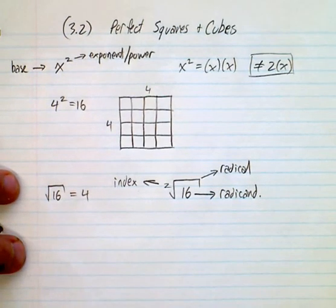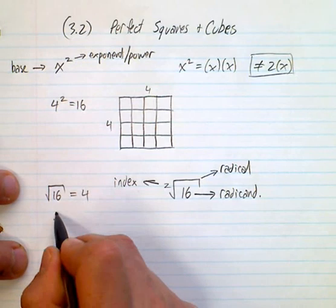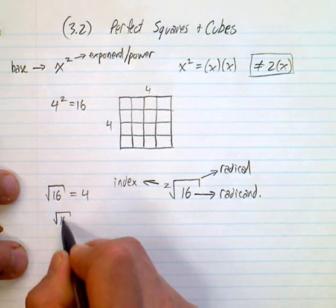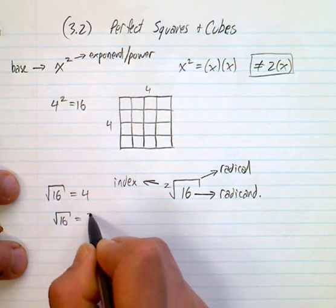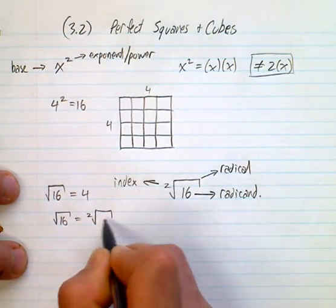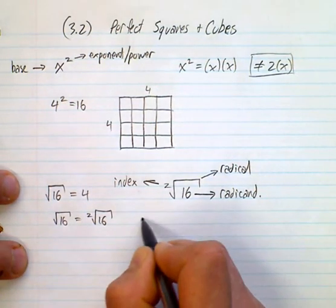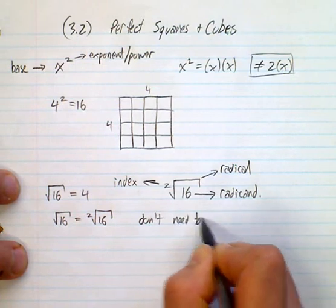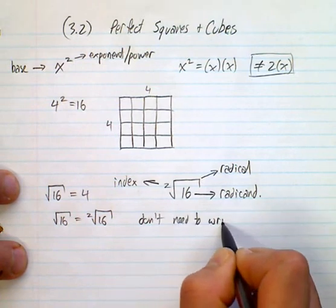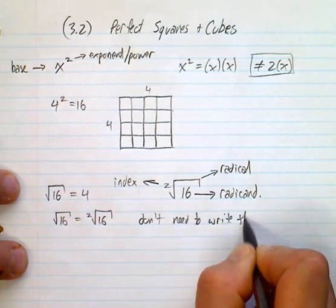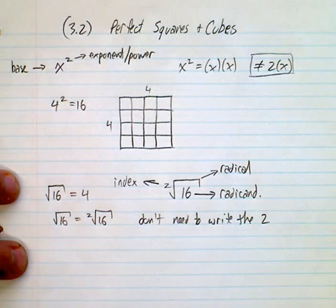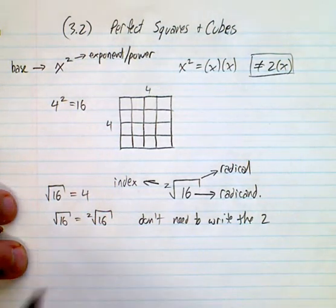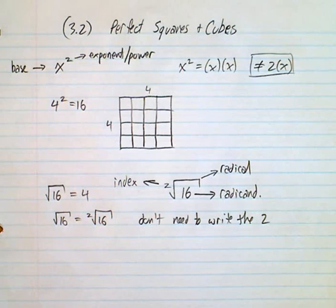The index of 2 — we don't need to write it. So the square root of 16 is equal to this as well; we don't need to write the 2 for a square root. When we get to cube roots and beyond, we will definitely need to write it.